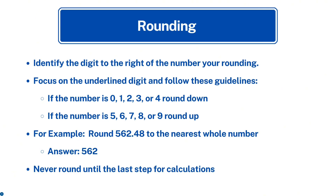Let's review rounding. First, identify the digit to the right of the number you're rounding. If the digit is 0, 1, 2, 3, or 4, you round down. If the number is 5, 6, 7, 8, or 9, you round up. For example: rounding 562.48 to the nearest whole number — we focus on the 4, so we round down, giving us 562. Never round until the last step of your calculations.